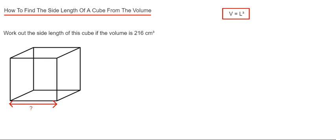Let's have a look at the example. Work out the side length of this cube if the volume is 216 cm³.